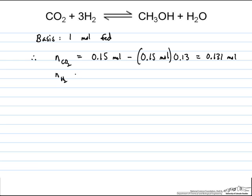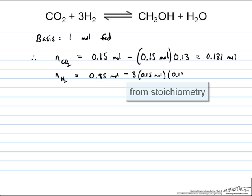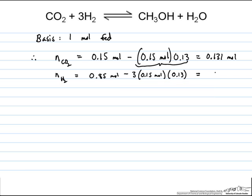Similarly, the number of moles of hydrogen, we start with 0.85 moles. We can convert 3 times the amount of moles of CO2 that we convert according to our balanced equation. So we know we convert, this is how many CO2 moles we convert, and so 3 times that number of moles is shown. That means if we add this up, we have 0.792 moles of hydrogen left at the end.